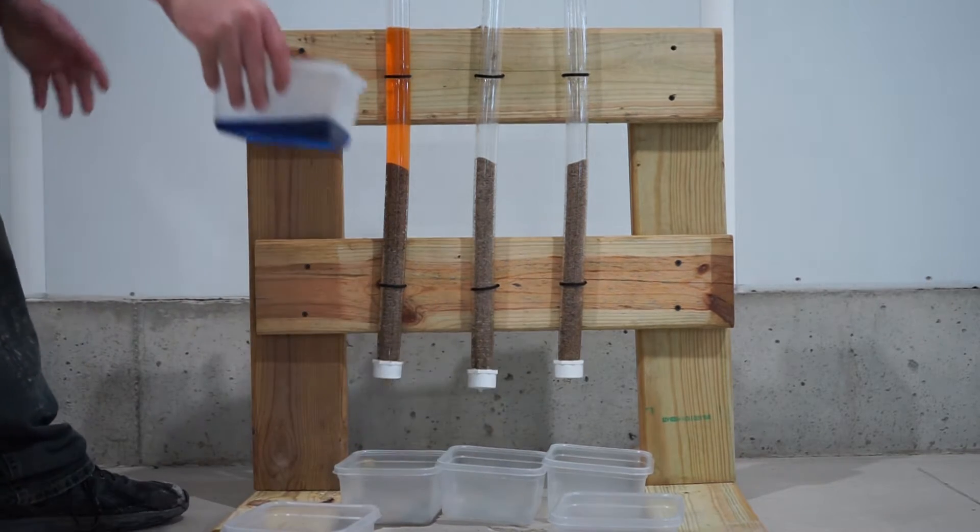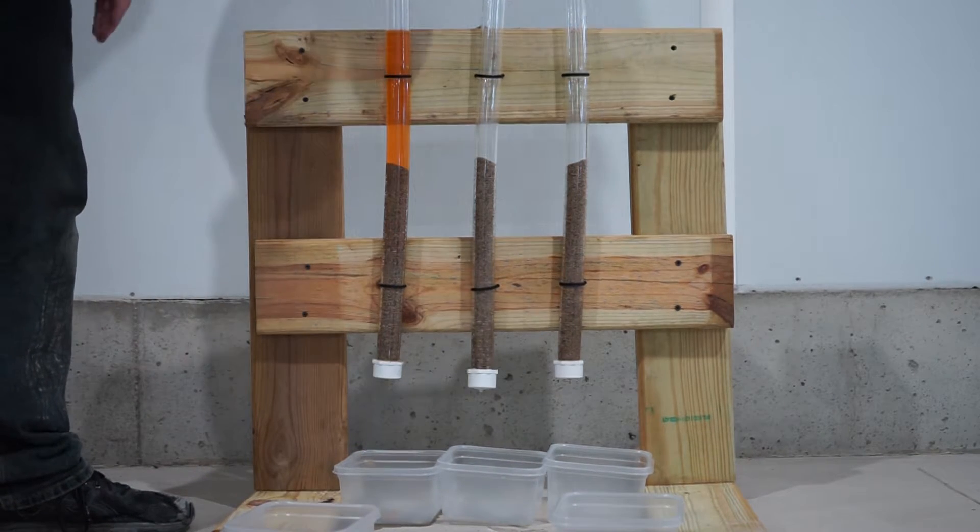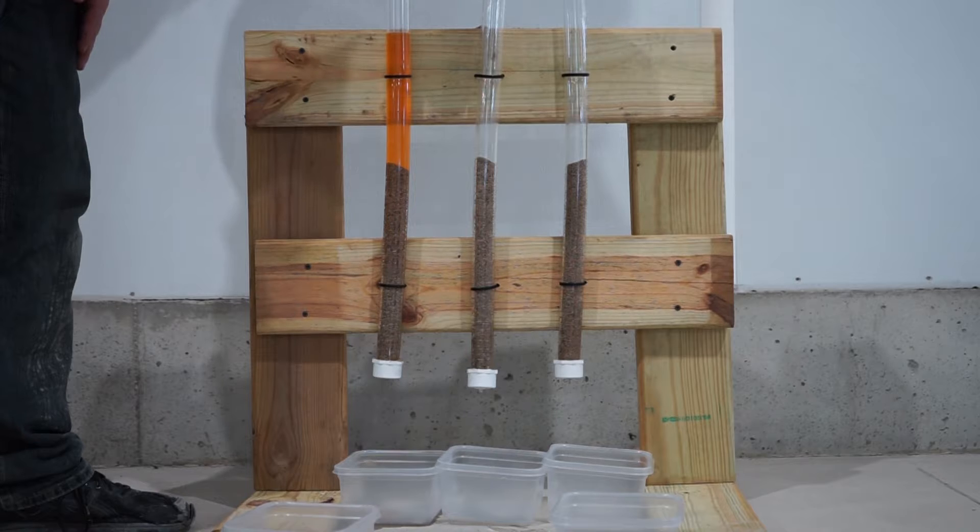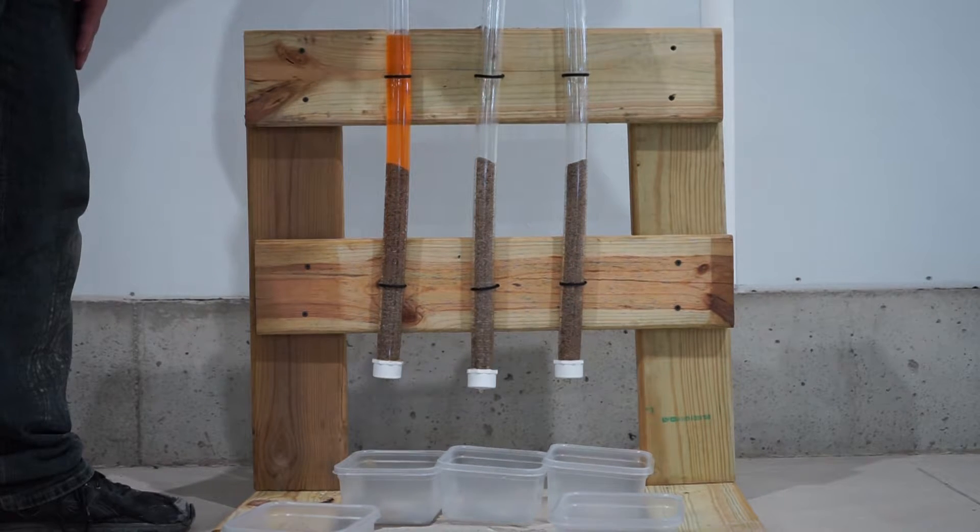So what we have for demonstration today is three tubes full of sand and water, which represent the soil profile of the root zone in your fields.